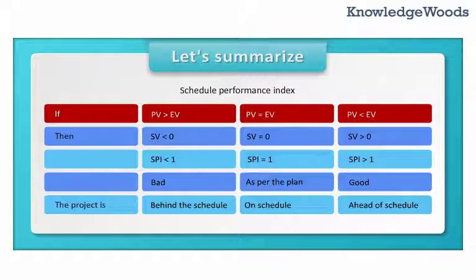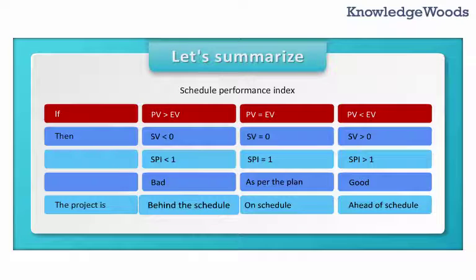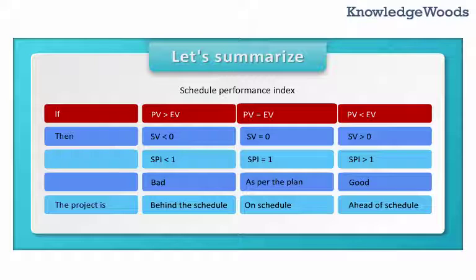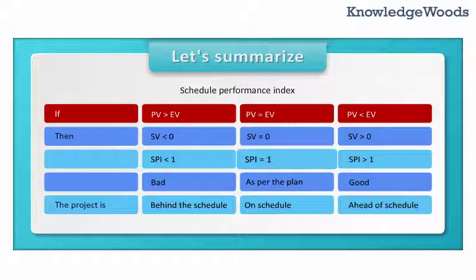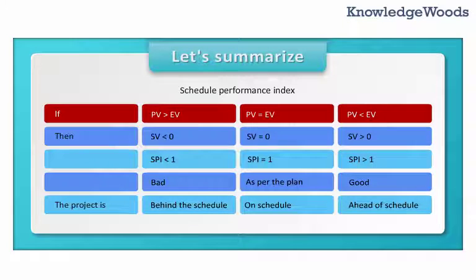Schedule Performance Index also has three situations. If planned value is greater than earned value, schedule variance is negative and SPI is less than 1 — a bad situation meaning the project is behind schedule. If planned value equals earned value, schedule variance is 0 and SPI equals 1, meaning the project is on schedule. If planned value is less than earned value, schedule variance is positive and SPI is greater than 1 — a good situation where the project is ahead of schedule.